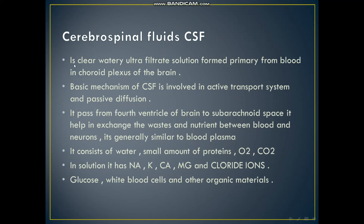Cerebrospinal fluid is a clear watery ultrafiltrate solution formed primarily from blood in the choroid plexus of the brain. The basic mechanism of cerebrospinal fluid involves an active transport system, and passive diffusion. It passes from the fourth ventricle of the brain to the subarachnoid space.